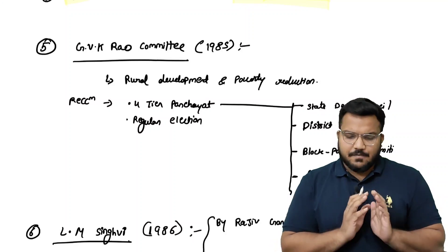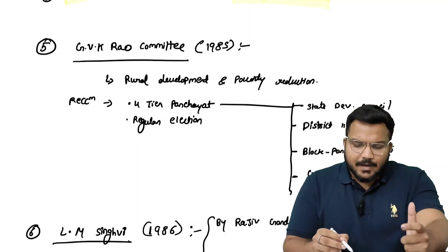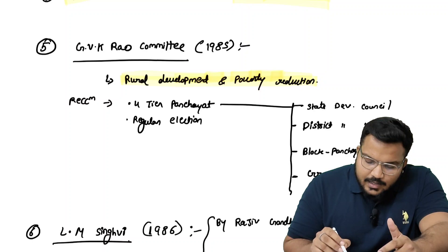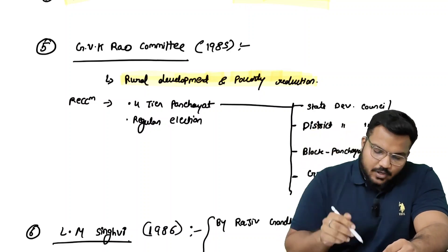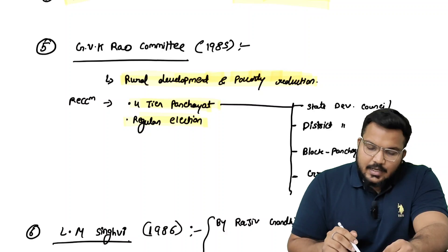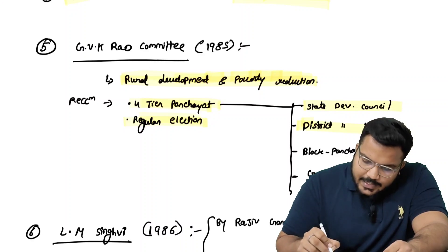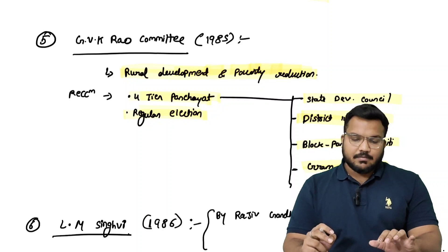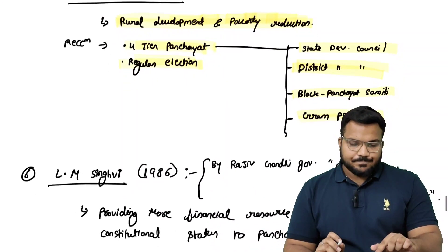GVK Rao Committee — 1985, rural development and poverty reduction के लिए बैठाई गई। इनका recommendation था four-tier government: state development council, district development council, block panchayat samiti, और gram panchayat। साथ ही regular elections की बात की। GVK Rao Committee का सबसे important point था: rural development and poverty reduction की बात।